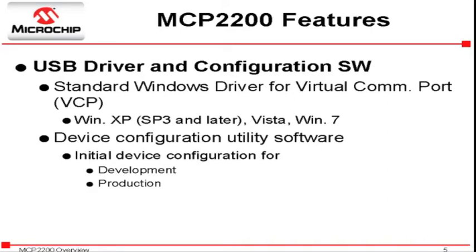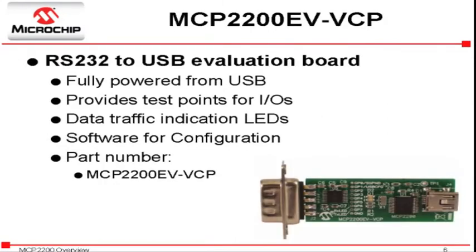Microchip offers configuration software which can be used to configure the device in order to simplify evaluation in the user system. Microchip also offers production software. Microchip released the MCP2200 EV-VCP development board to provide quick and simple evaluation of the MCP2200. Some of the features of this evaluation board are that it is fully powered from the USB port and provides test points for I/O and LEDs that indicate USB activity.